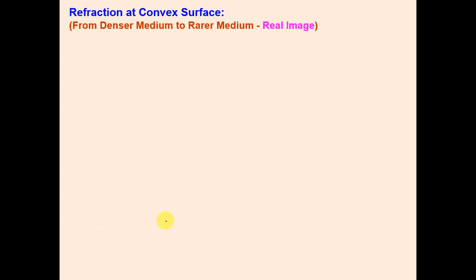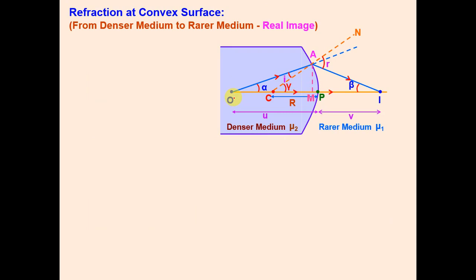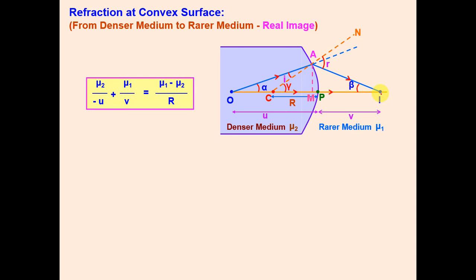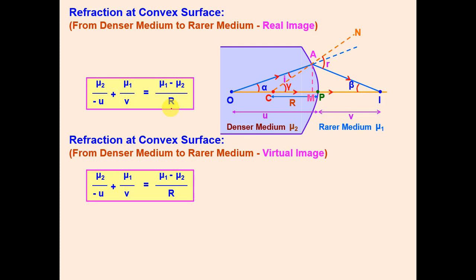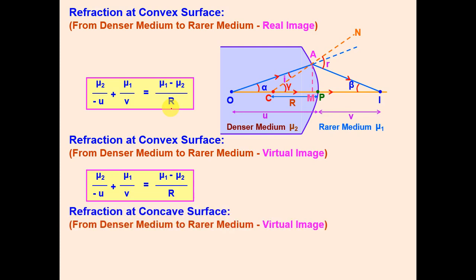When the object is in the denser medium and the surface is convex, the refracted ray bends away from the normal and actually meets the principal axis, giving a real image. Using the same three steps, the relation obtained is: mu 2/(−u) + mu 1/v = (mu 1 − mu 2)/R. Similar relations are derived for a convex surface giving a virtual image when the object is in the denser medium.